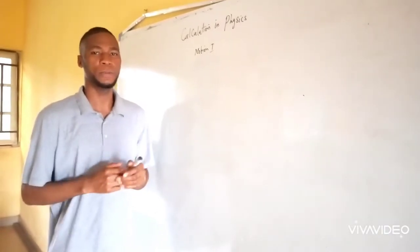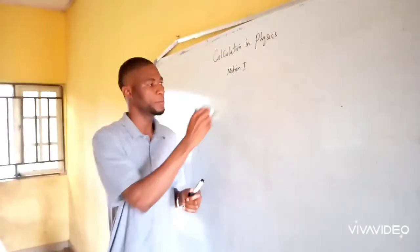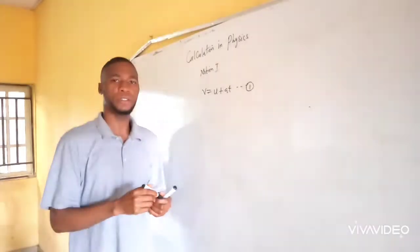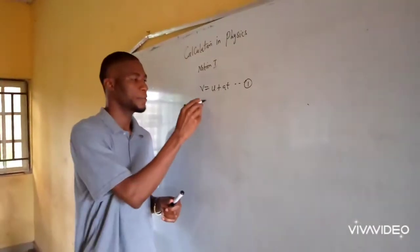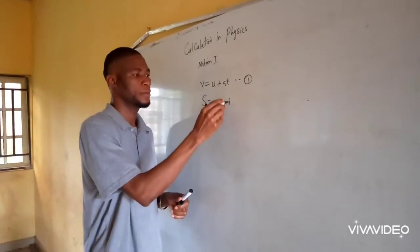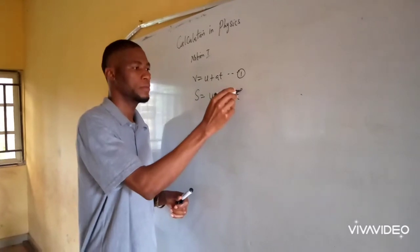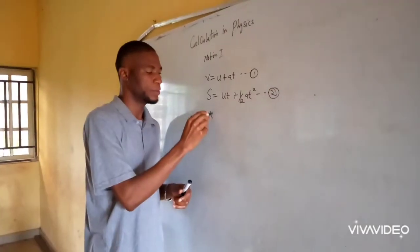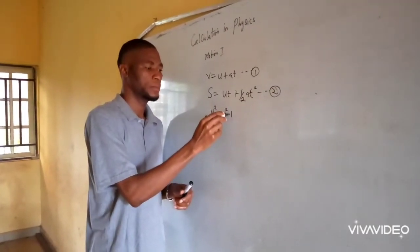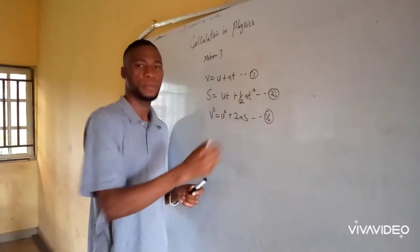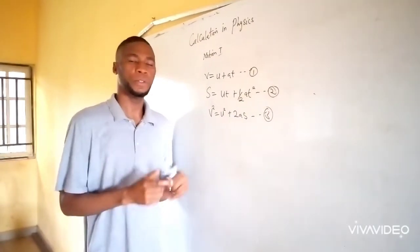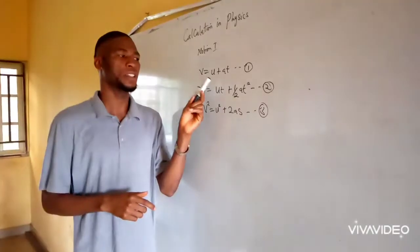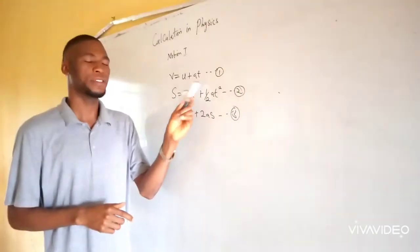Motion has three formulas for calculation. This is the first equation for calculating motion, then we have the second one, and the third one. These are the three equations for calculating motion. The first one: the final velocity equals the initial velocity plus acceleration times time.